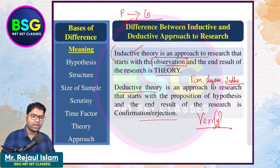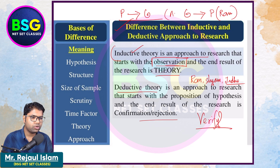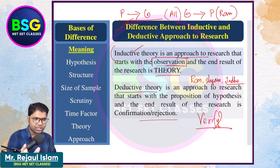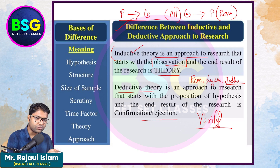There was a general fact and from it we derive a particular element. So, what is this? General to particular. Particular is that Ram is a particular person; general is that all human beings are mortal. So, there is a particular concept that we have made.